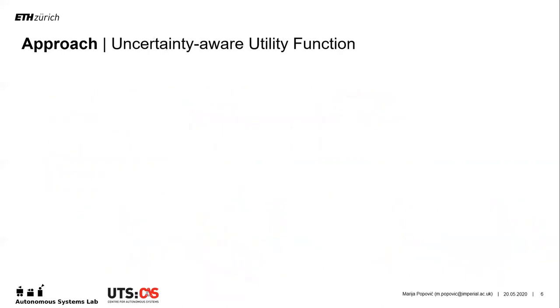As mentioned for planning, most previous utility functions only consider the field map state, neglecting the robot pose uncertainty. This is because the field map and robot pose are represented in fundamentally different ways, making their uncertainties difficult to couple mathematically without heuristic tuning. We propose a solution to this problem for a continuous GP-based mapping scenario.